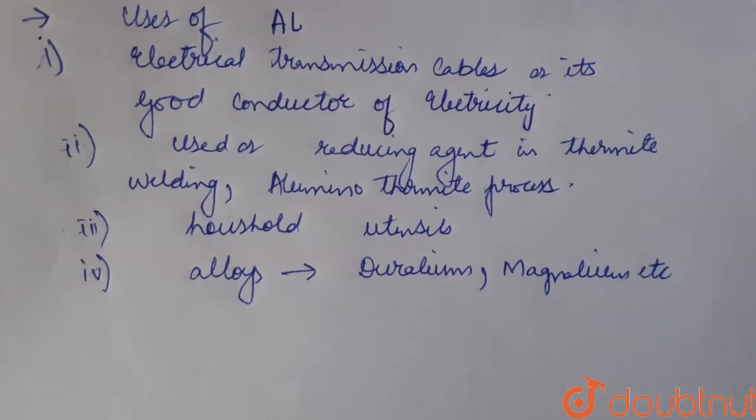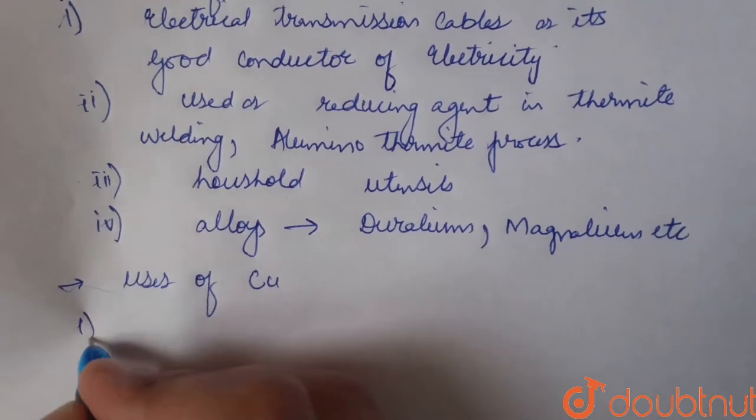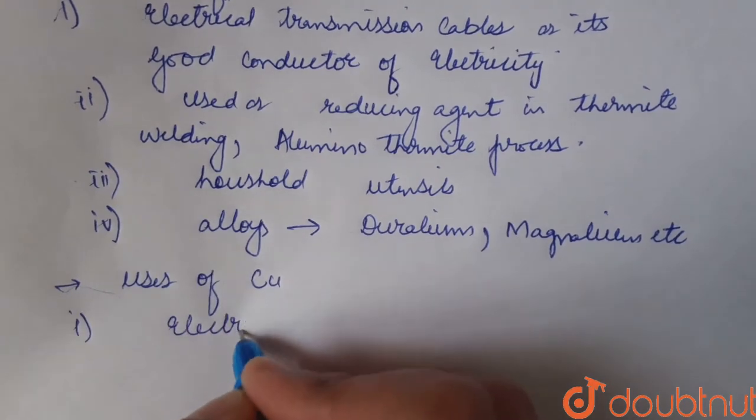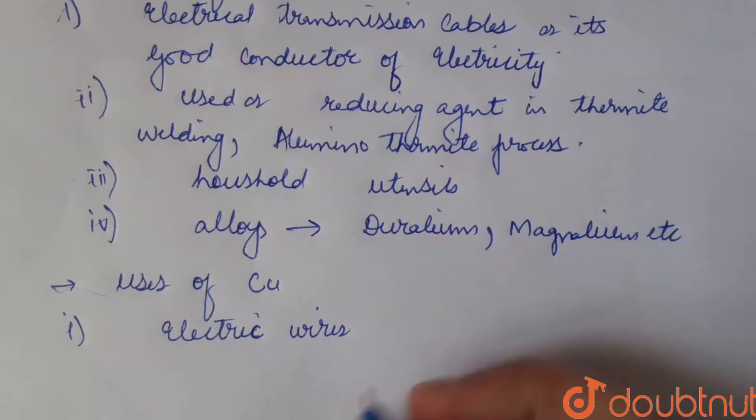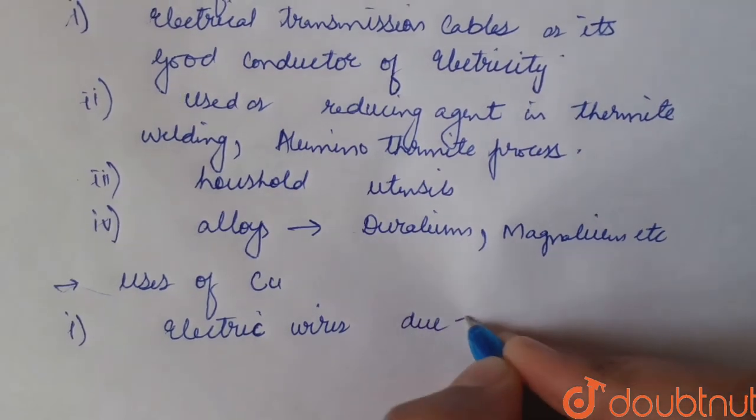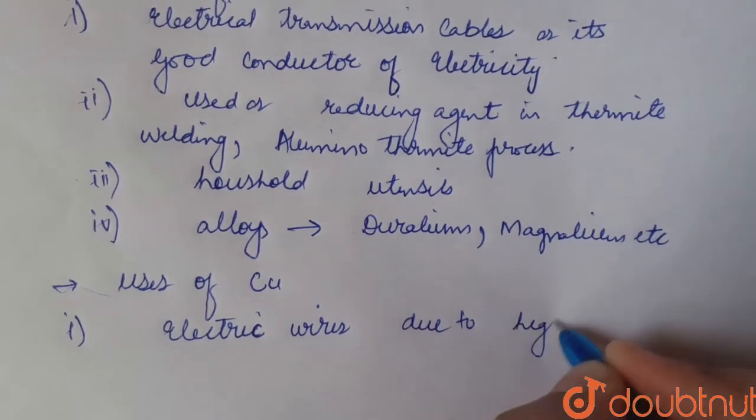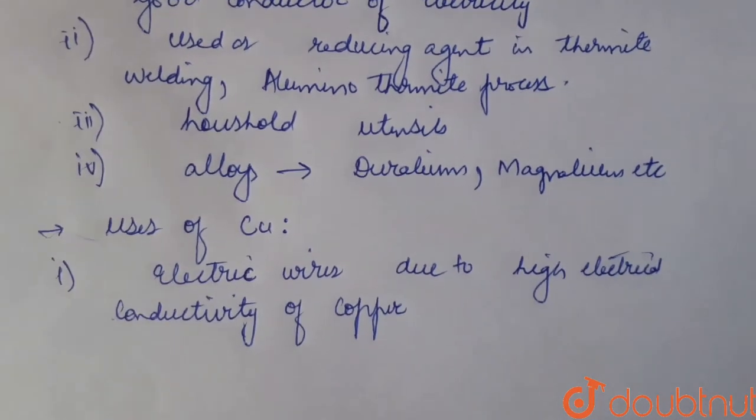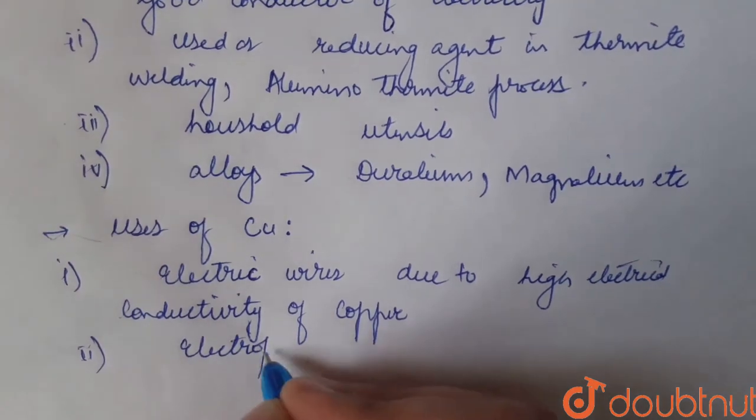Now uses of copper. Copper is used for making electrical wires due to high electrical conductivity of copper. Copper is used for electroplating.